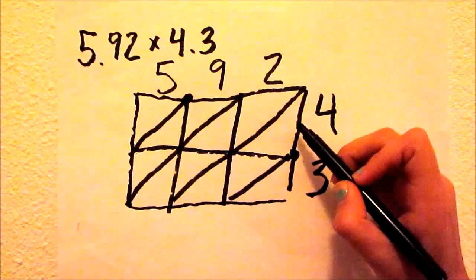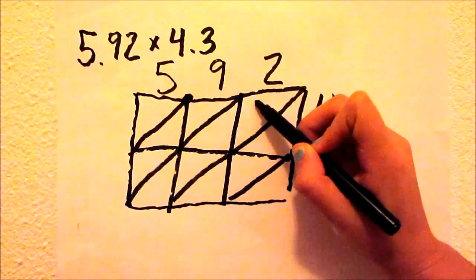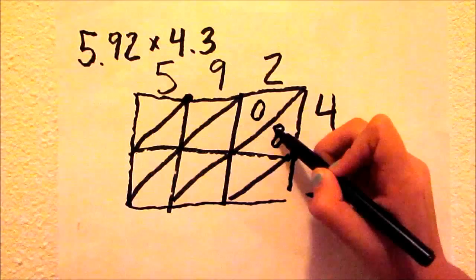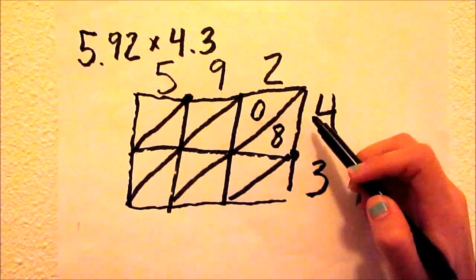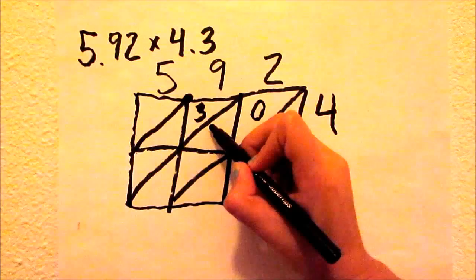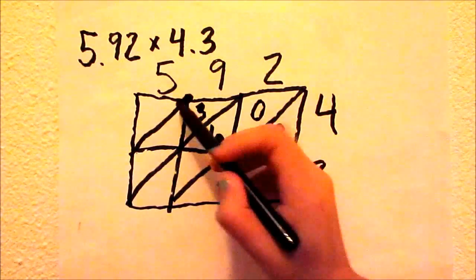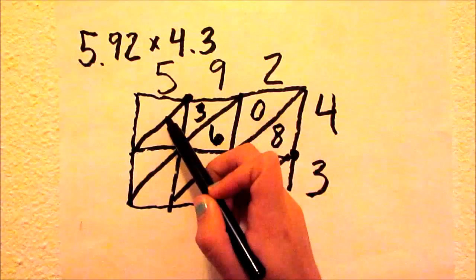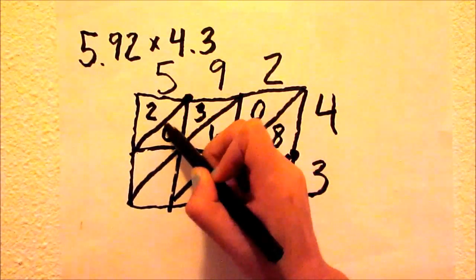2 times 4 equals 8. We have 0 in the tenths place and an 8 in the ones place. 9 times 4 is 36. We have a 3 in the tenths place and a 6 in the ones place. Then we multiply 5 times 4. We have a 2 in the tenths place and a 0 in the ones place.